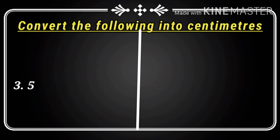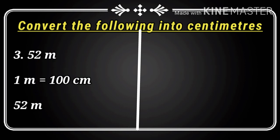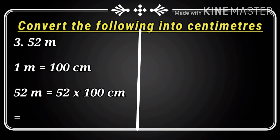Now I will do question number three. Question number three is 52 meters. One meter equals hundred centimeters. So how many in 52 meters? 52 multiplied by hundred equals 5,200 centimeters. When we convert meter into centimeter, we must write centimeter in the answer as well.